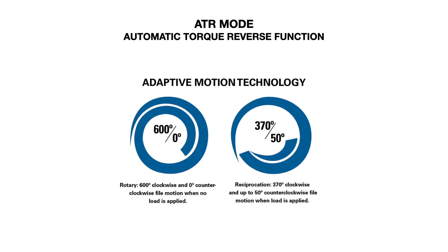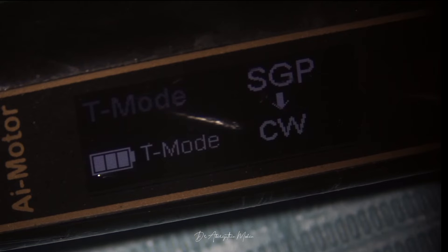They also have an ATR mode, which is not unique to this endomotor — some other brands have it too. The ATR mode is inspired from Dentsply Sirona's Adaptive Motion, where the file is used in continuous rotation but when it encounters resistance in narrow or curved canals, the file reciprocates by itself until it becomes a little loose in the canal, then starts rotating clockwise again. This is an additional protective feature to prevent file breakage in curved canals. Personally I don't use this mode, but it's an additional function present in modern endomotors.